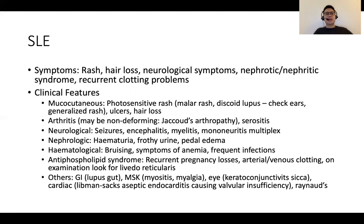The next condition is systemic lupus erythematosus. SLE is a great mimicker of many conditions, presenting in protean fashions. Patients can present with a rash, hair loss, neurological symptoms, nephrotic syndrome, or recurrent clotting problems. It can be thought of in terms of two big groups of connective tissue problems — mucocutaneous and arthritis — where mucocutaneous features include rash, ulcers, and hair loss, and arthritis is usually non-deforming.